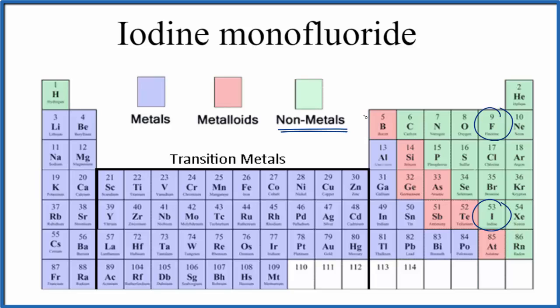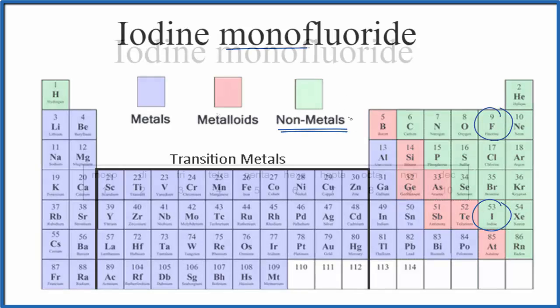Two nonmetals is a molecular or covalent compound. And when we have a molecular compound, we need to take prefixes into account when we write the formula.